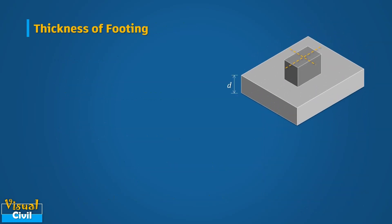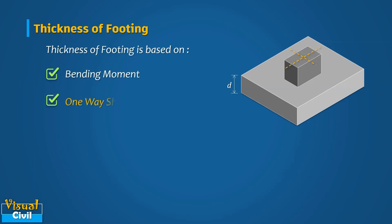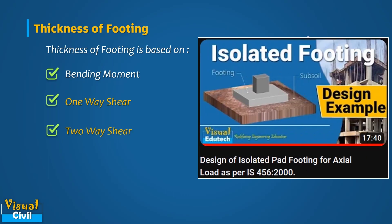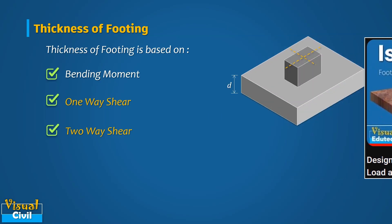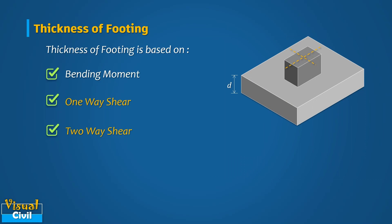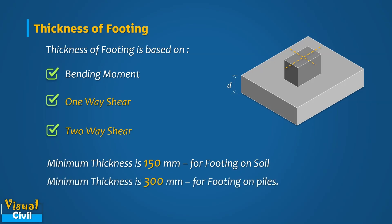The thickness of footing is decided based on bending moment criteria, one-way shear criteria, and two-way shear criteria. Detailed calculations for the thickness of footing are available in a separate video on isolated footing design on this channel, linked in the description. As per IS code, the minimum thickness should be 150 mm for footing resting on soil, and 300 mm for footing resting on piles.